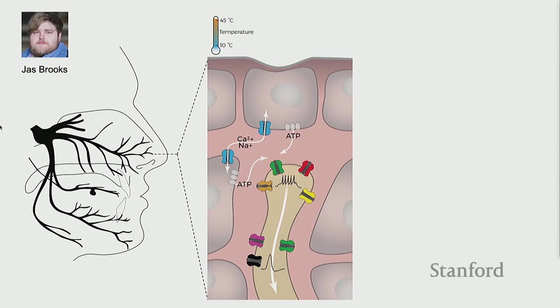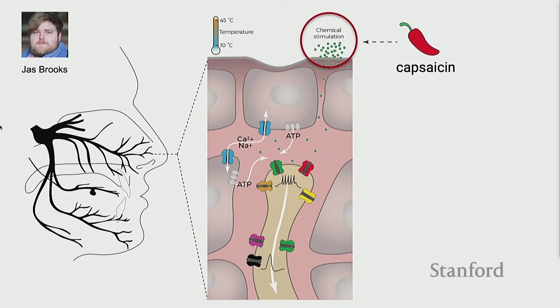We have temperature sensors in our skin receptors that fire to indicate what temperature we're feeling. But these receptors also have a chemical mechanism at the cellular level. When you go to an Indian restaurant and eat spicy food, you feel hot — because the same receptor fires. The only reason you know it's spicy food and not temperature is because the contextual cues are obvious. The cell itself has no idea whether you're eating or not.